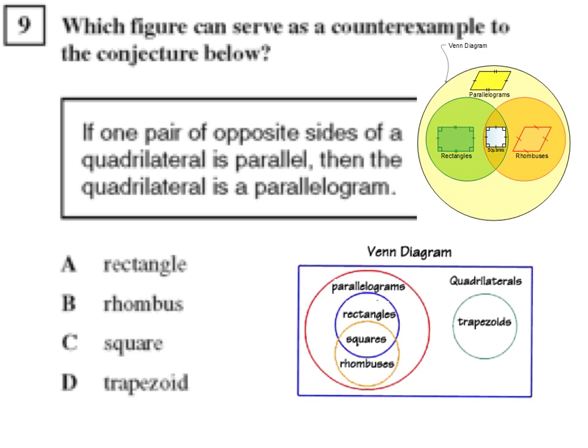A trapezoid, on the other hand, has a shape that has two sides parallel. This side is parallel to this side, but this side is not parallel to this side.